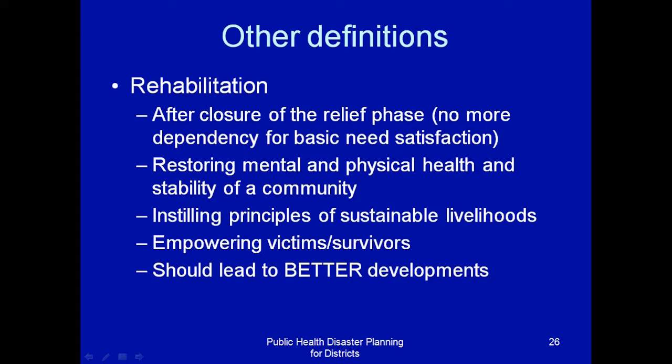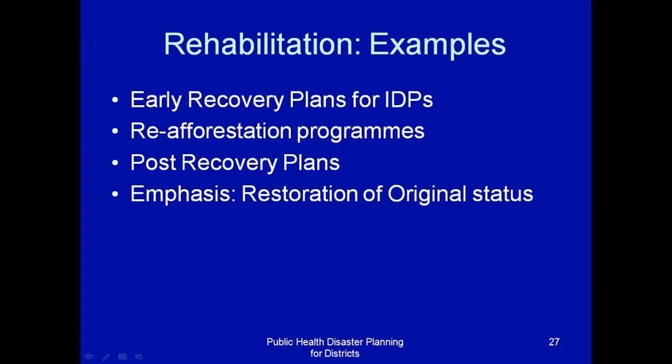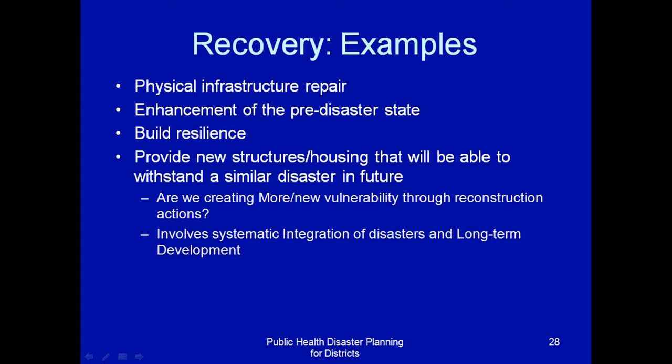Rehabilitation should lead to better and sustainable development. Early recovery plans for IDPs, reforestation programs, and post-recovery plans are all emphasized for restoration of original status. People need to live the way they used to — to have democracy, to elect their leaders, to respect their leaders, to live the life they used to live. Recovery examples may involve physical infrastructure repair, enhancement of the pre-disaster state, building resilience, providing new structures, and housing schemes that will be able to withstand a similar disaster. Building codes and standards should be applied to ensure houses can sustain similar disasters in future.